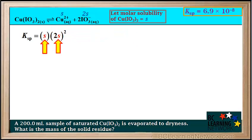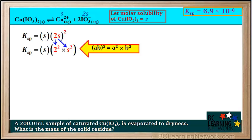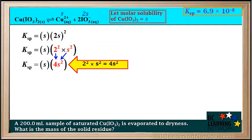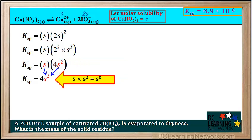Now we'll proceed to solve for the molar solubility S. Because (AB)² = A² × B², (2S)² equals 2² times S², which is 4S². Because S times S² equals S³, Ksp is equal to 4S³.